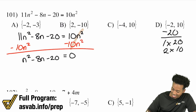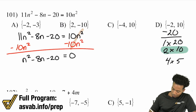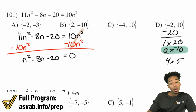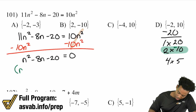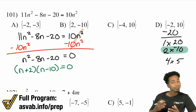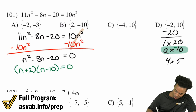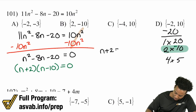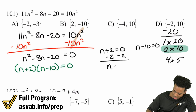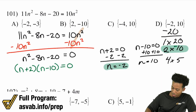The factor pairs of 20: 1 times 20, 2 times 10, and 4 times 5. The one that works is 2 times 10 — if you make 10 the negative one, the difference is 8, making it negative 8, and they multiply to negative 20. So we'll have N plus 2 times N minus 10 set equal to zero. Zero product property: N plus 2 equals zero — subtract 2 — N equals negative 2. N minus 10 equals zero — add 10 — N equals 10. The answer is choice D.